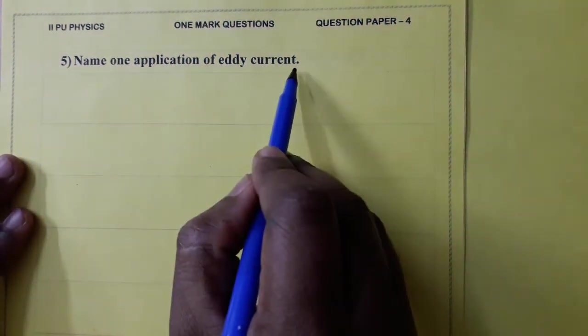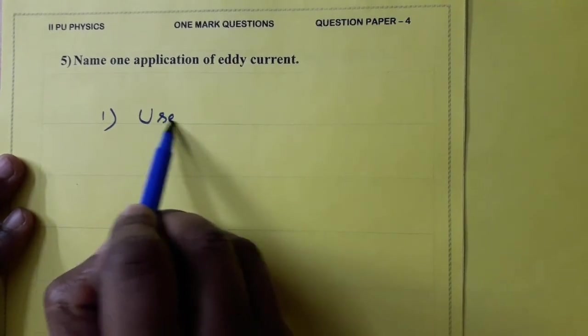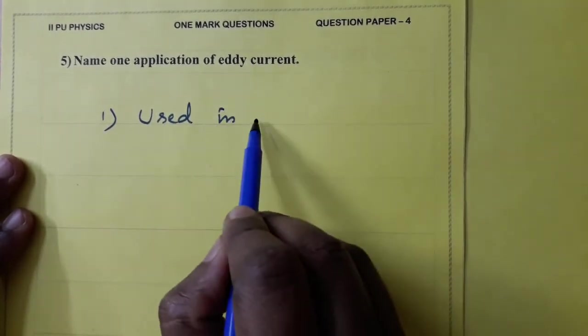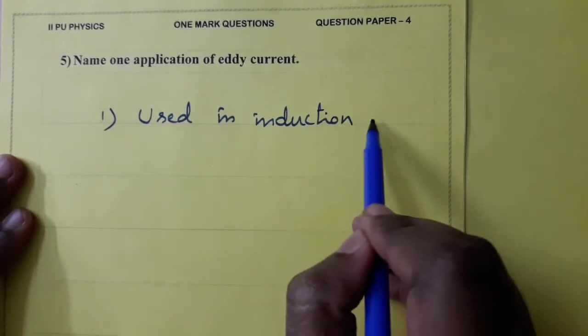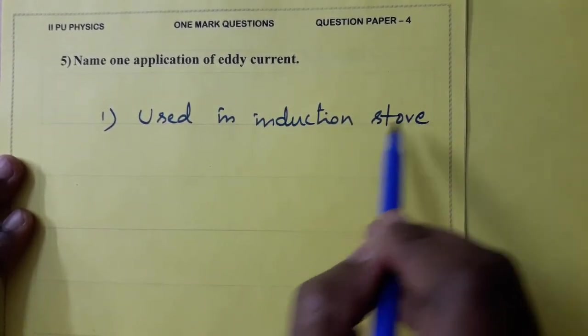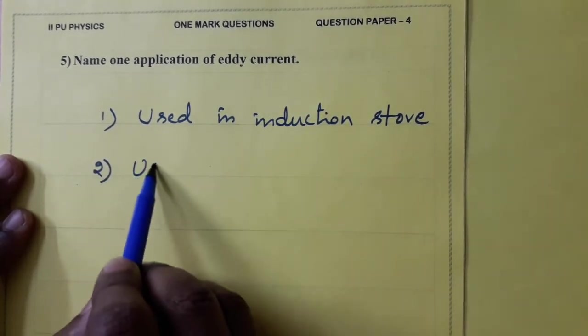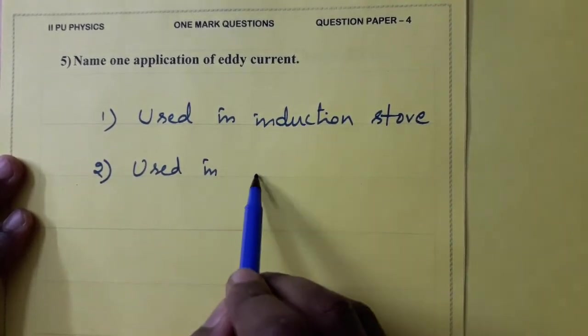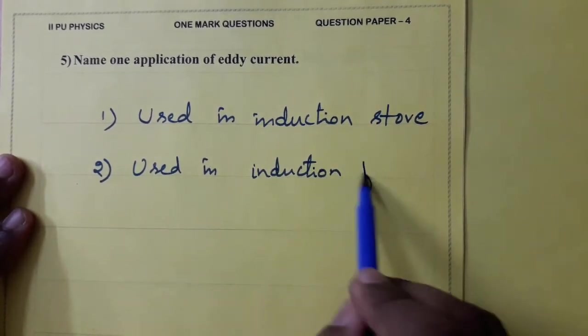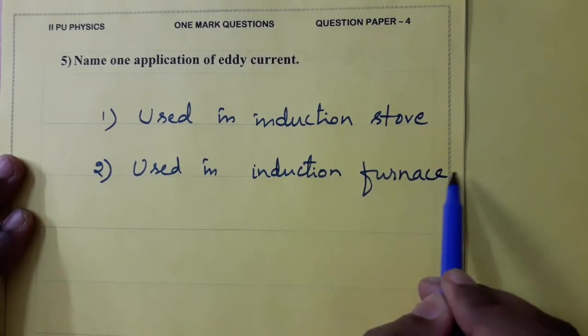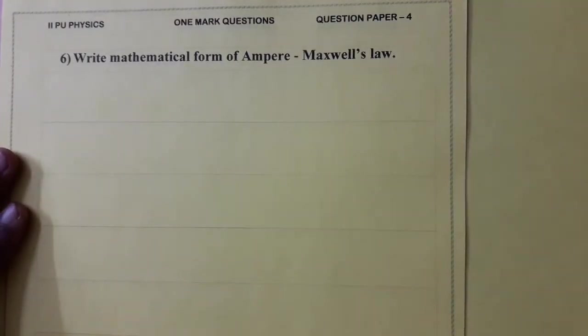Name one application of eddy current. Let us write two. It is used in induction stove. The one which is called flameless. Second, used in induction furnace.